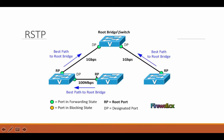You have a designated port, which is a forwarding port for every LAN segment. You have an alternative port, which is the best alternative path to the root bridge — different from the root port — and the alternative port moves to the forwarding state if there is a failure on the designated port for that segment. You then have a backup port, which is a backup or redundant path to a segment where another bridge is already connected. The backup port applies only when a single switch has two links in the same collision domain, which requires the switch to be attached to a hub. Finally, there is a disabled port state, which isn't strictly part of STP — a network admin can manually disable a port.